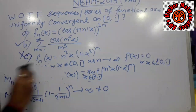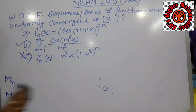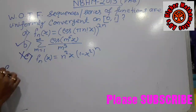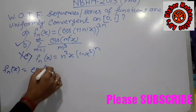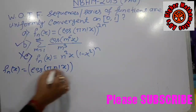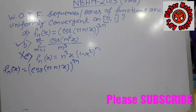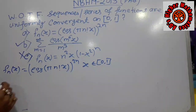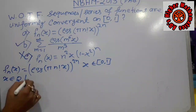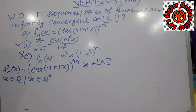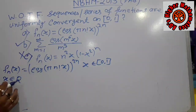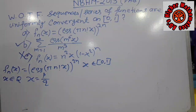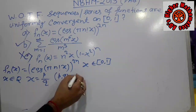Now we come to the first option A. Here F_n(x) = cos(π · n! · x)^(2n). This is a very interesting option. Since x belongs to the closed interval [0,1], there are two possibilities: either x is rational (x ∈ ℚ) or x is irrational (x ∈ ℚ complement). We first consider the case where x is rational, so x can be written as x = p/q where p and q are co-prime integers with gcd(p, q) = 1.